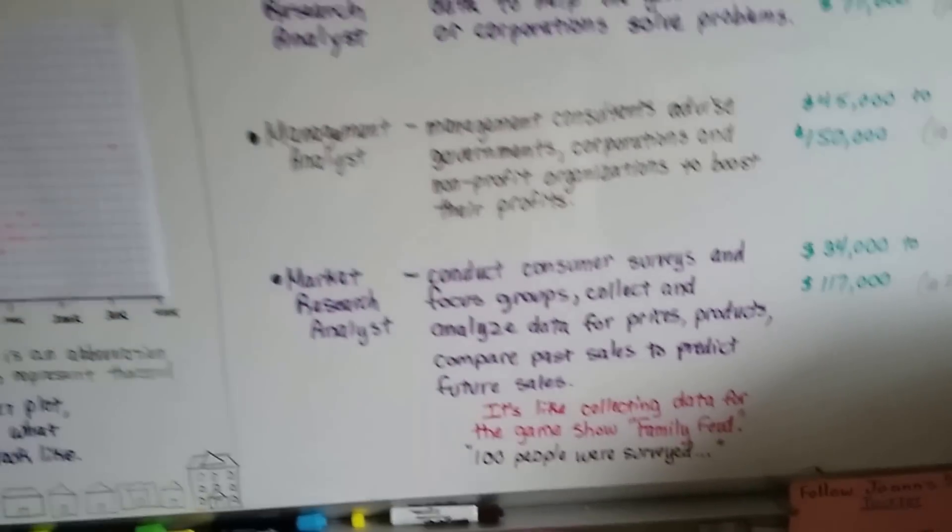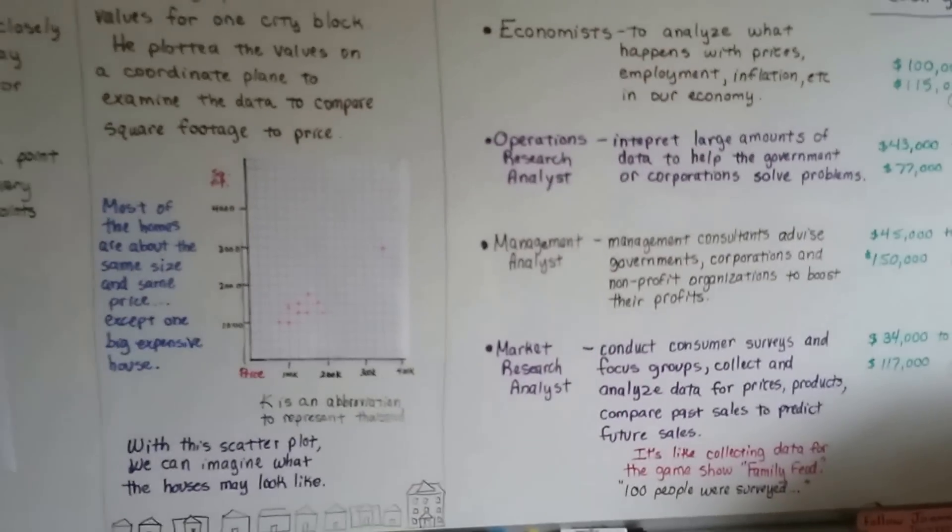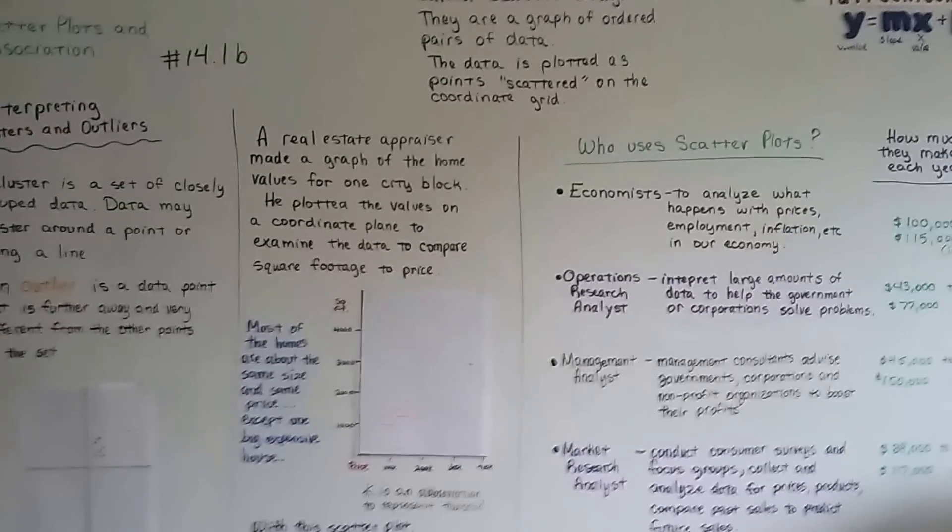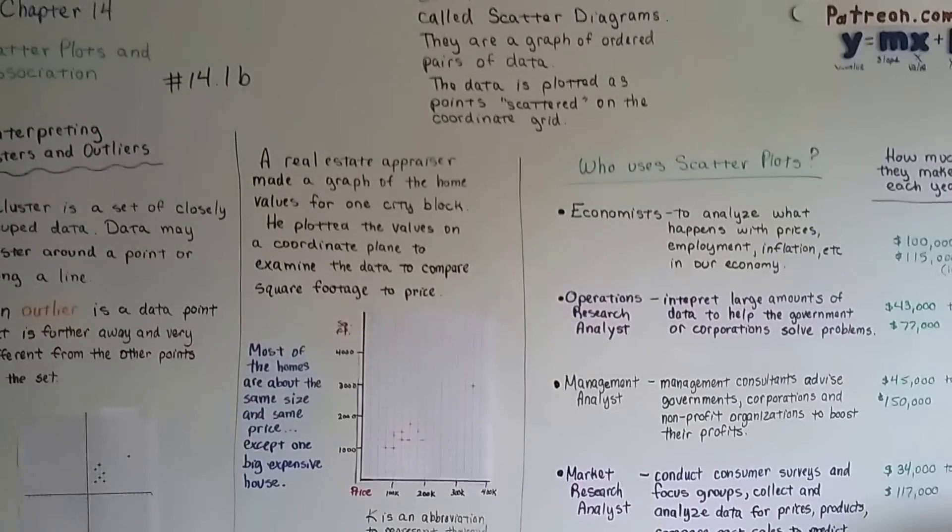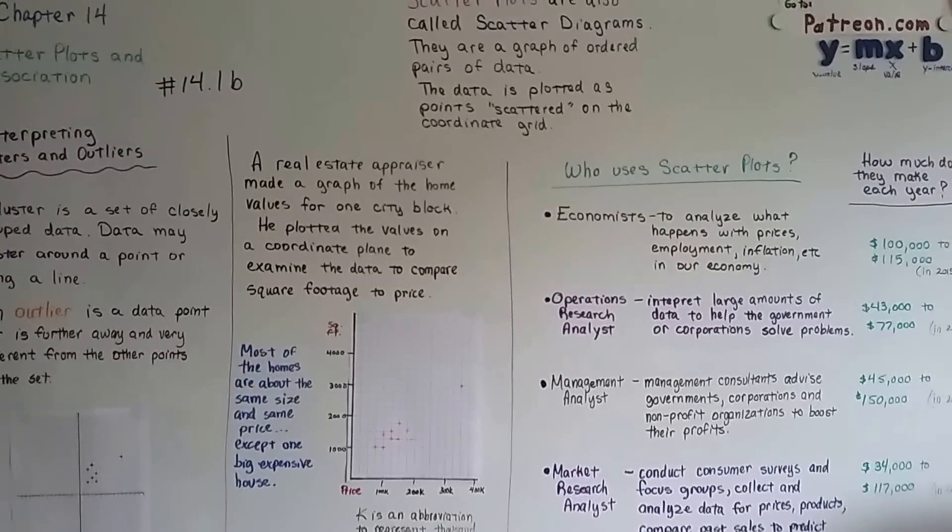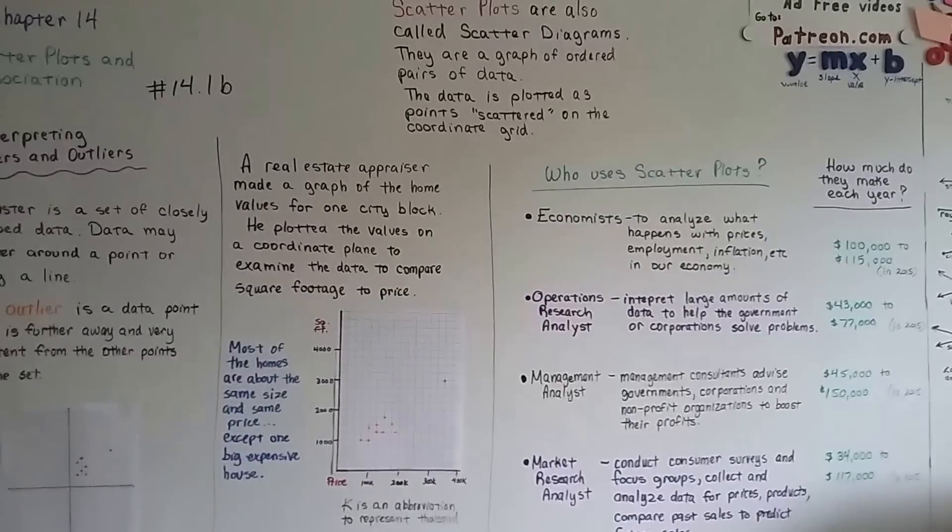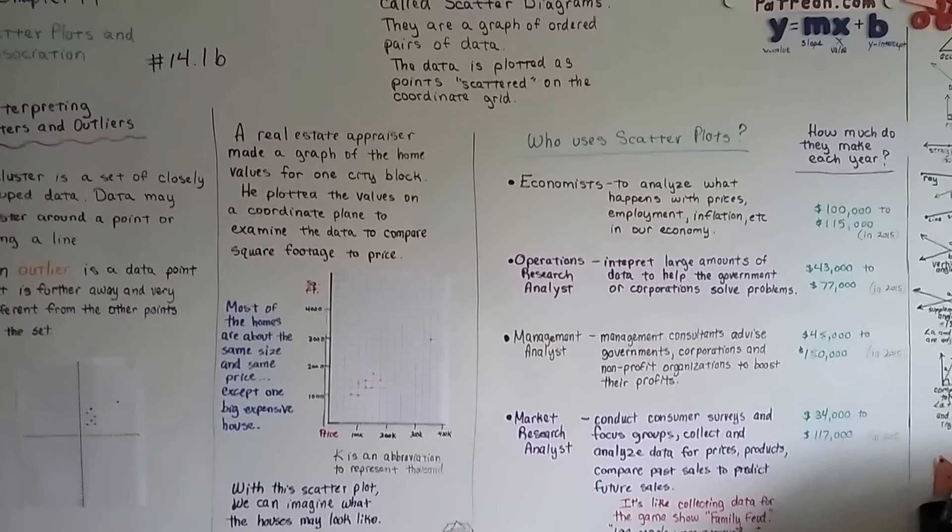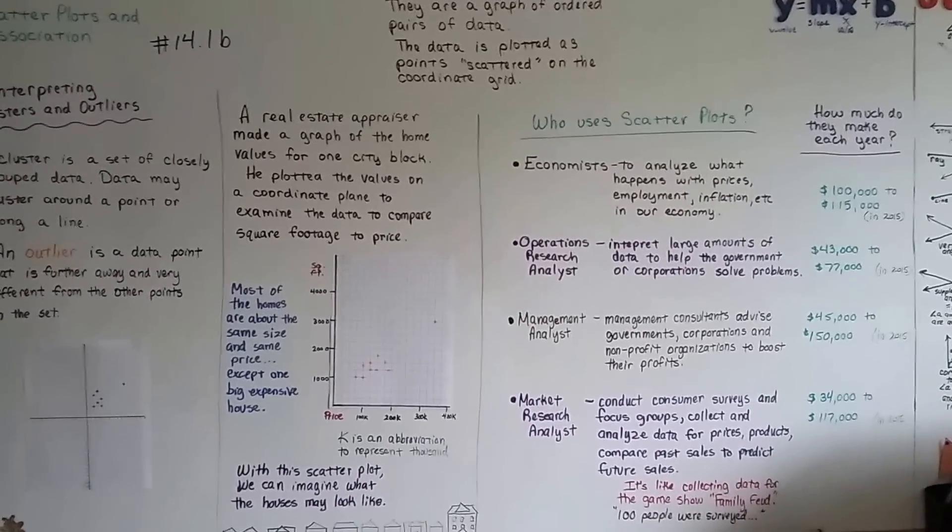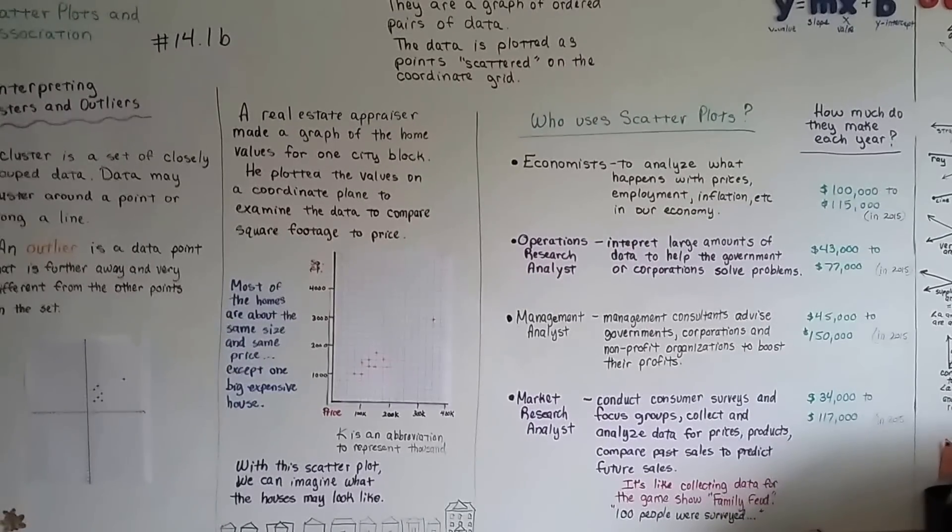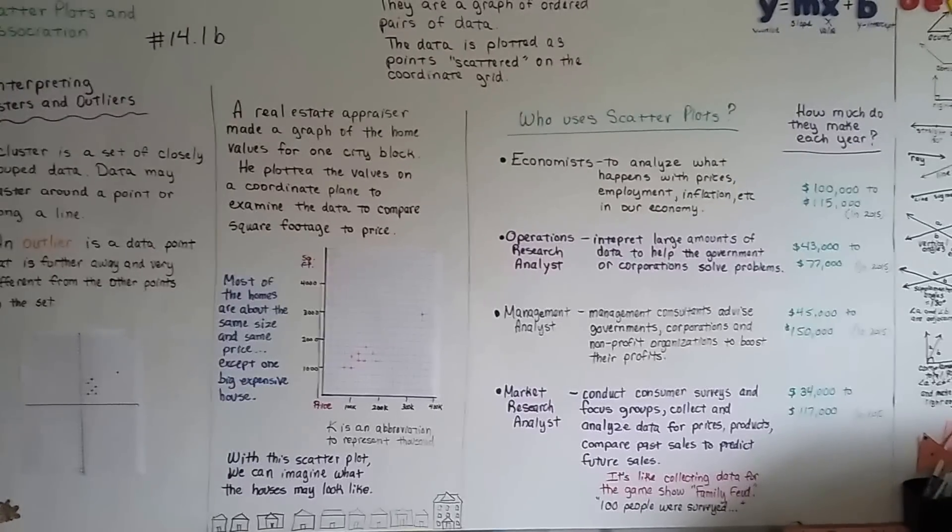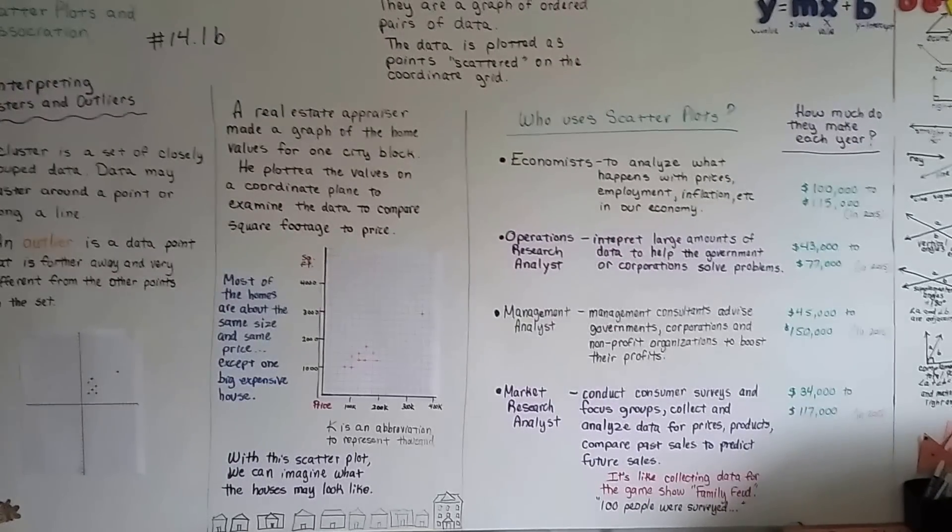So that is interpreting clusters and outliers. That's scatter plots. And we're going to move on to the next video, 14.1c. We're going to talk about determining association and what association means. It's how the data is related to each other. Sorry, my camera's shaking. My arm's been hurting. So keep your chin up. You're going to be okay. And let's go find out about association. Bye.